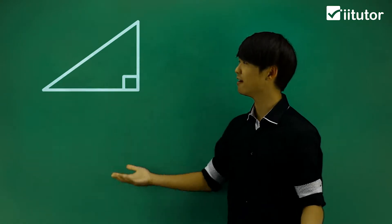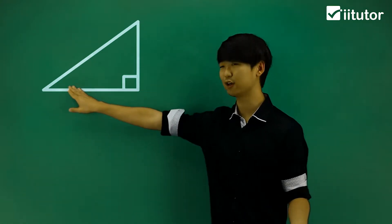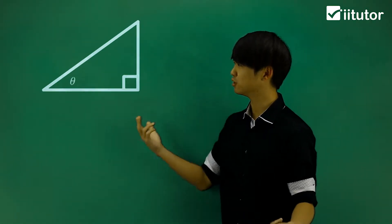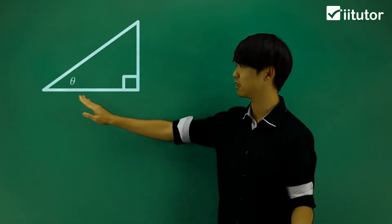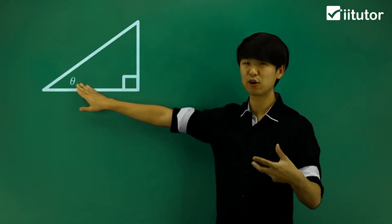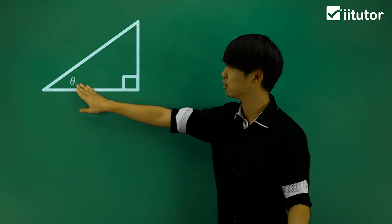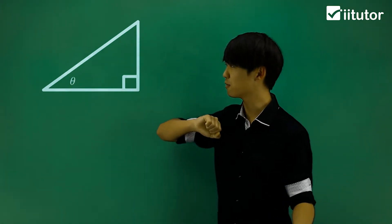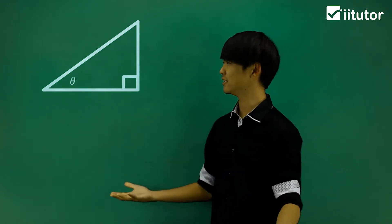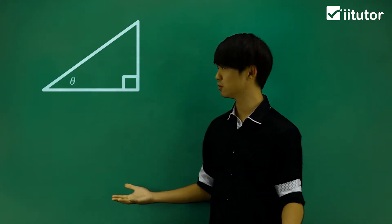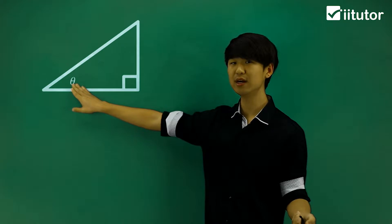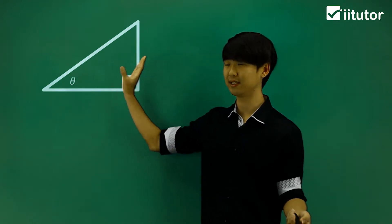So if I have an angle in here, we're going to call that theta. Once you familiarise yourselves with this symbol, we're going to be using theta a lot to represent angles in this triangle. Trigonometry is a relationship between this angle and the side lengths.